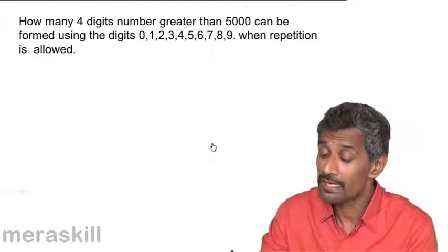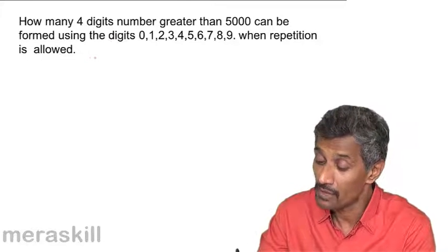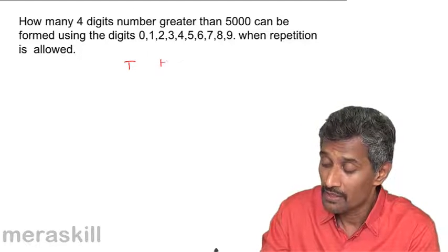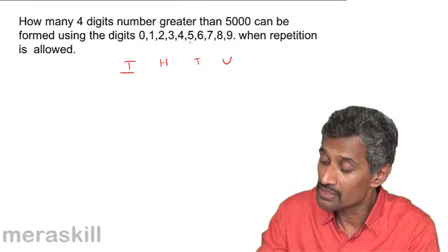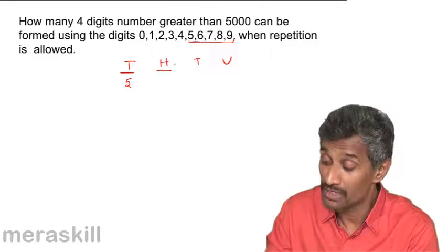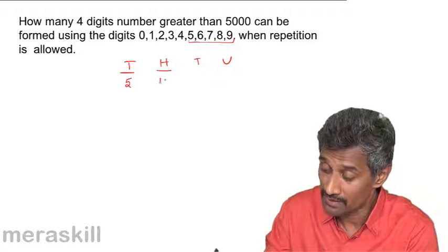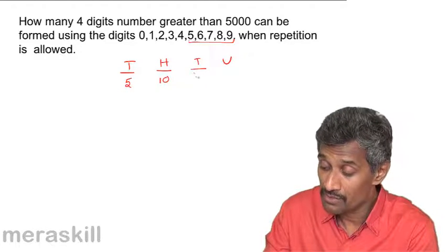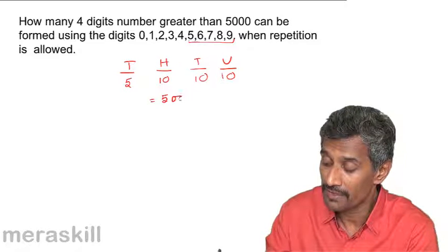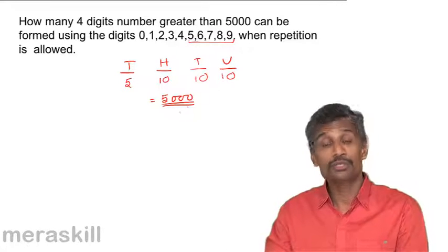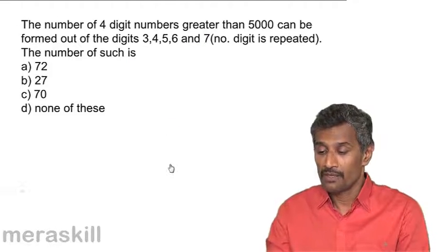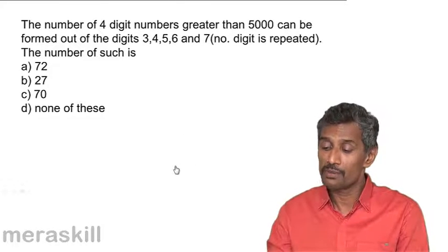For four-digit numbers greater than 5000 using digits 0–6 when repetition is allowed: in the thousands place only 5 digits (1–5 or 5–6 range giving 5 options) are valid. In hundreds, tens, and units places all 10 digits are available. So total = 5 × 10 × 10 × 10 = 5000 such numbers, including those with repeated digits.